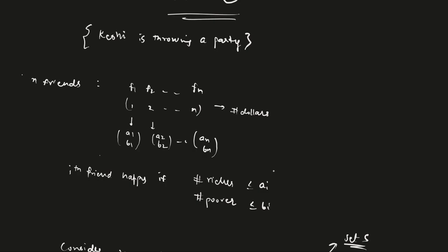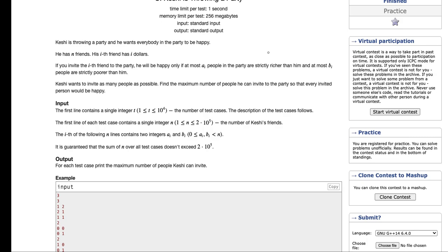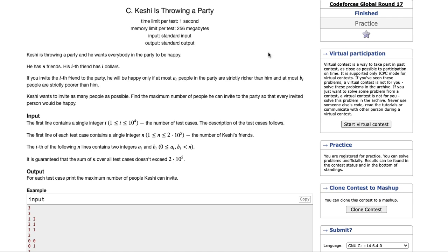We'll be talking about Codeforces problem 1610C, which the contest was held on the 23rd of November 2021. The statement states that we have n friends. This is a statement.